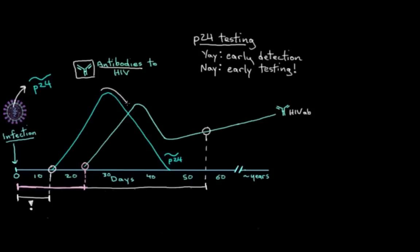By the way, the reason the concentration falls off here is because once our antibodies start to develop, you can see them sort of going up here, they bind to the P24 antigen and form these little complexes which aren't really detectable using our standard P24 antigen test.